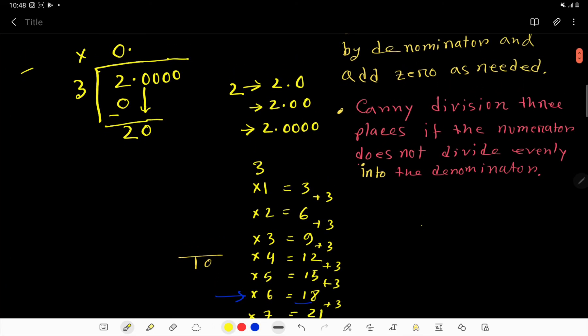Now, come. So 3 times 6, 3 times 6, that gives us 18. Look, here 18. Now subtract. We are getting here 2.